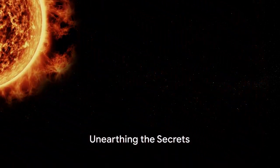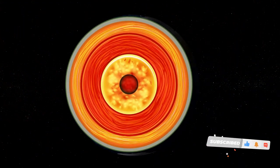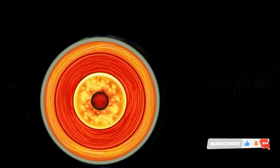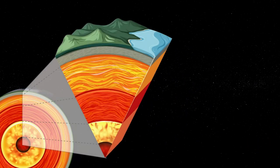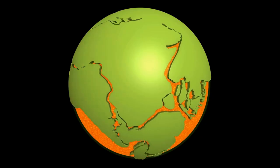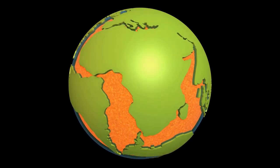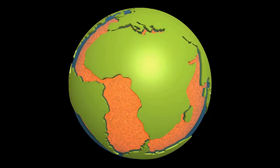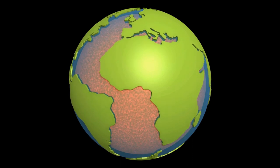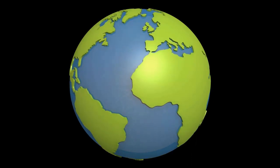Imagine the Earth as a giant jigsaw puzzle, where the pieces are constantly moving and shifting. These pieces, known as tectonic plates, fit together to form the Earth's crust. However, they're not stationary. They glide, collide, and grind against each other, building up energy over time. When this energy is too great to be contained, it releases suddenly, shaking the ground beneath us. This is what we call an earthquake.